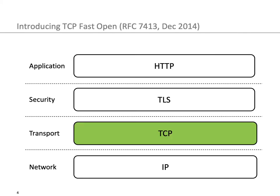The fast open extension of the TCP protocol has been standardized as RFC 7413 in December 2014. By now, the TCP fast open protocol is supported within various kernels of popular operating systems such as Windows, Mac OS, and Linux.